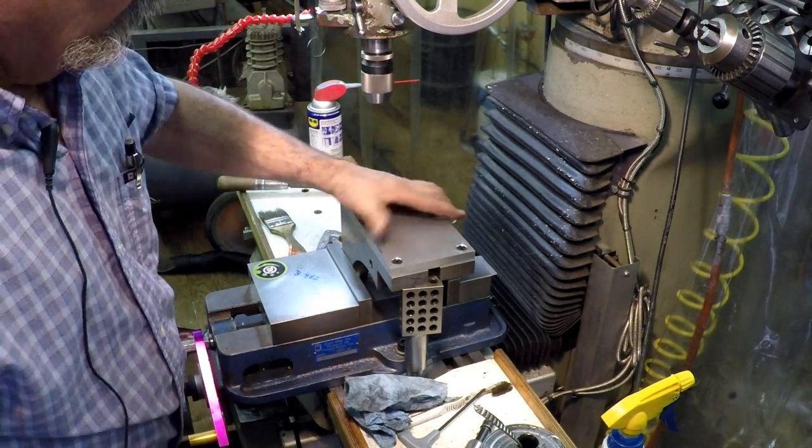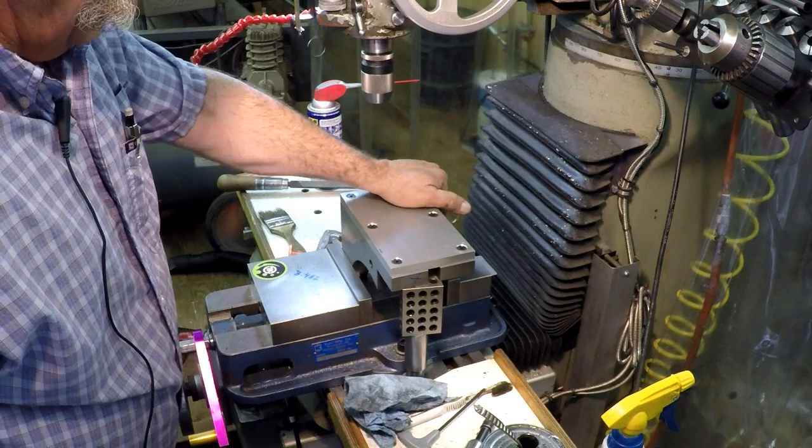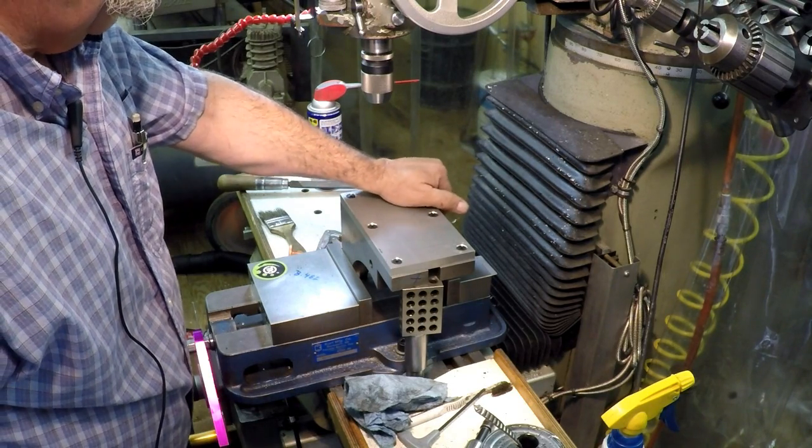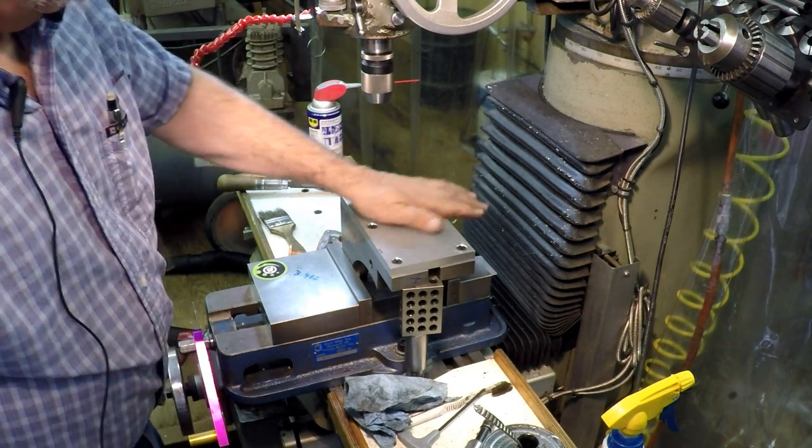We'll put the dividing head back together. We'll set it up on the surface plate and do some measurements, see how things come out.